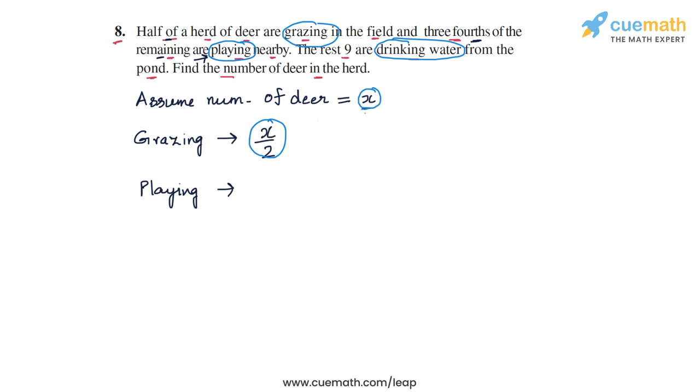So the number of deer who are playing will be three-fourths of the remaining, which is three-fourths times x by 2. This equals 3x by 8.